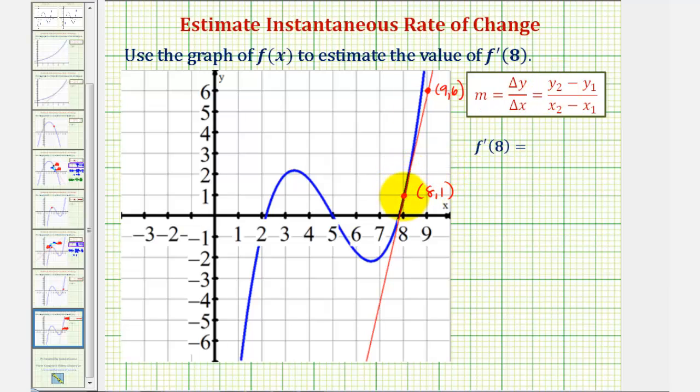If we want to move from this point to this point, notice how we would have to go up five units, and therefore the change of y is positive five, and then we'd have to go right one unit, so the change of x is positive one.